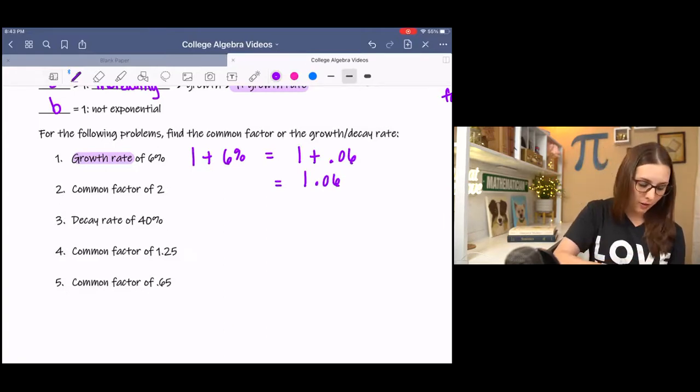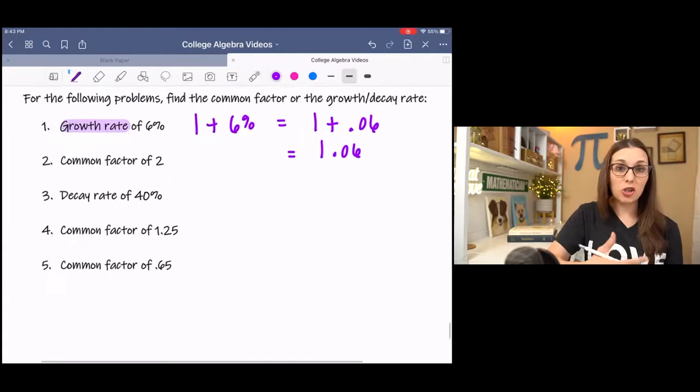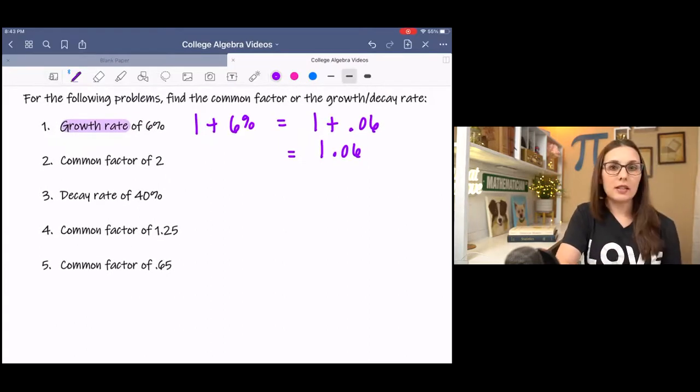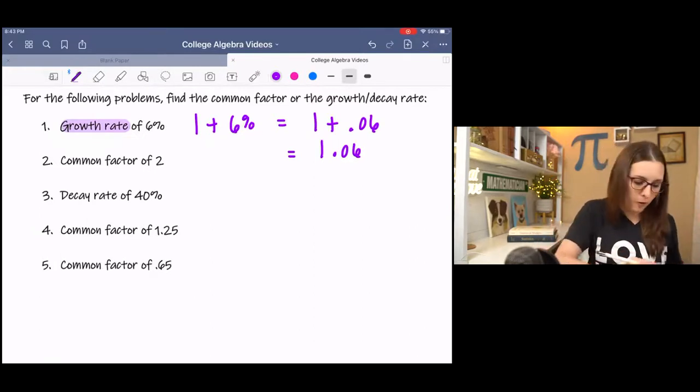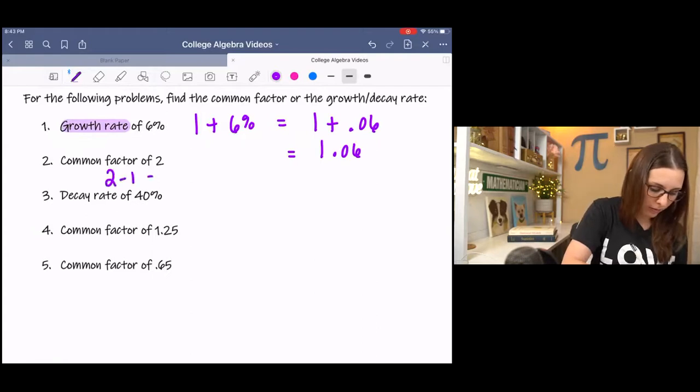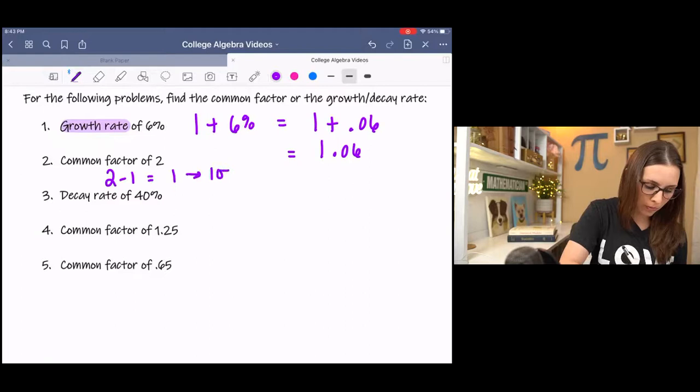Then, if the common factor is 2, then that indicates it's a number above 1. So we need to figure out how far is 2 from 1. That's 1, but in percentage form, that's 100% growth.